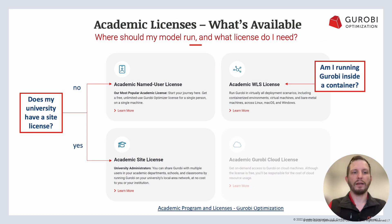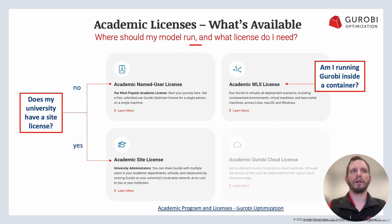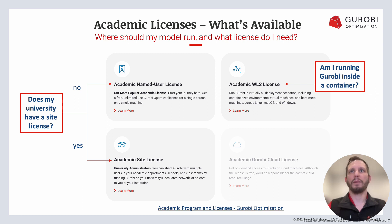If you're in academia — student or faculty — you may be thinking: how do I get access to Gurobi? This flowchart will help. If your university has a site license, that steers you to a named user license or an academic site license. If you're running Gurobi inside a container, that steers you towards our academic WLS (Web License Server). Check out the link and our academic pages to learn more.